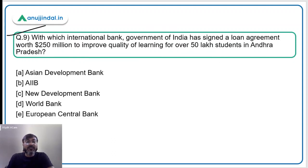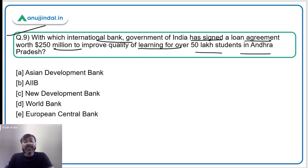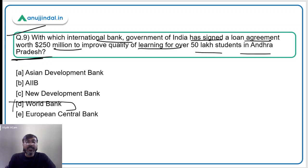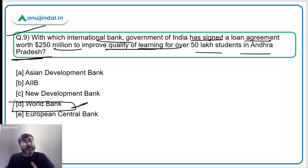Question number 9: with which international bank has the Government of India signed a loan agreement worth 250 million dollars to improve quality of learning for over 50 lakh students in Andhra Pradesh? Remember four key things about a loan: the state, the amount, the international bank, and the purpose. The international bank here is the World Bank — Option D is the correct answer. This loan of 250 million dollars aims to improve quality of learning for over 50 lakh students in Andhra Pradesh.